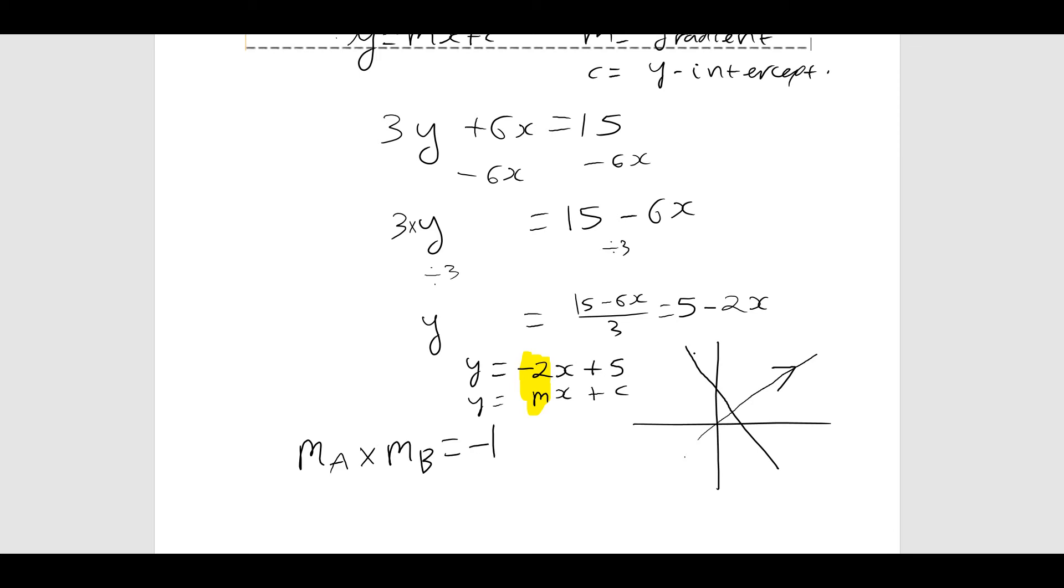So if I have here a gradient of minus 2, call this the original line A, then if I times it by the gradient of any line which is perpendicular to it, you can see we'll have the same slope upwards. If I take that minus 2 and times it by the gradient of any perpendicular line to it, we will get minus 1.